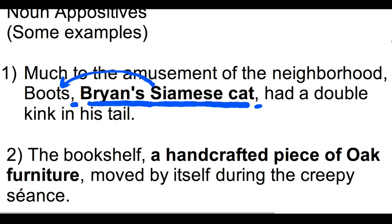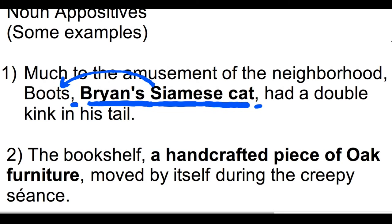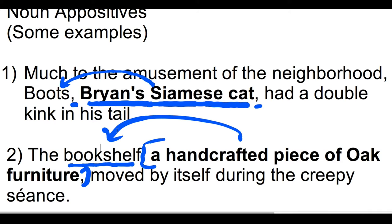Just try mixing it up. Here's another middle example: 'a handcrafted piece of oak furniture' — that tells you more about the bookshelf. The whole phrase, including the commas, tells you more about the bookshelf that comes right before it.